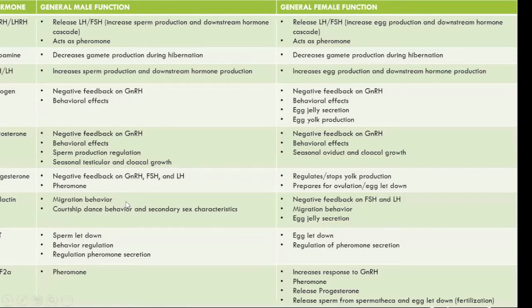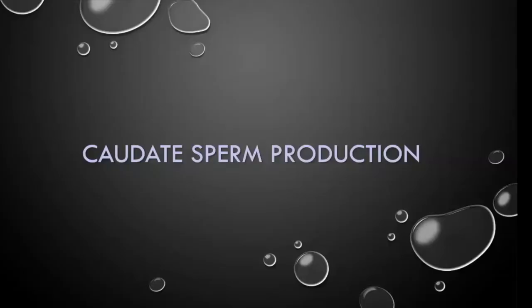This table is a reference for moving forward. These are the important hormones in salamander reproduction — it lists their primary functions in male and female. As we go through the lecture today I'll come back and highlight what I'm talking about, but we're not going to dwell on it now.